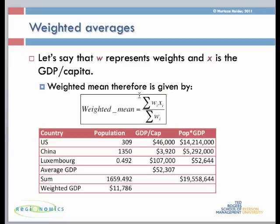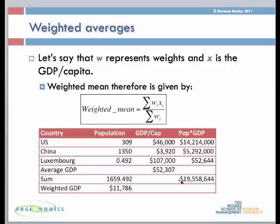The procedure is called the weighted mean. If w represents weights and x is the GDP per capita, the weighted mean is computed by multiplying the weight (population) by the GDP per capita and summing it up. The summation of w_i times x_i gives us the total, and dividing by the sum of weights — the total population of 1.65 billion — gives a weighted GDP of $11,786. That is the correct GDP for the three countries after weighting.